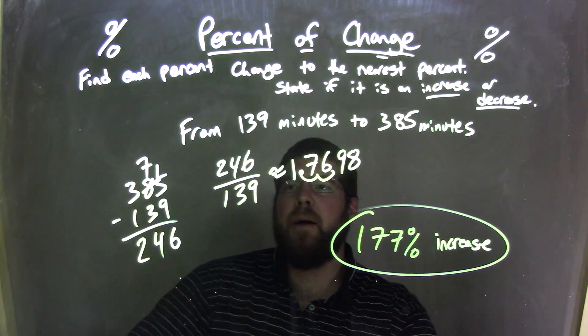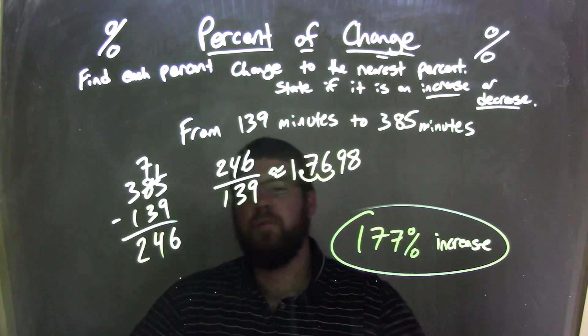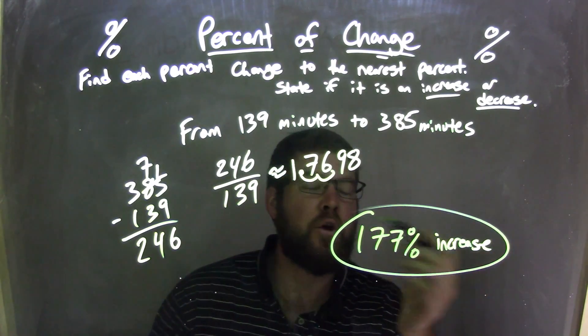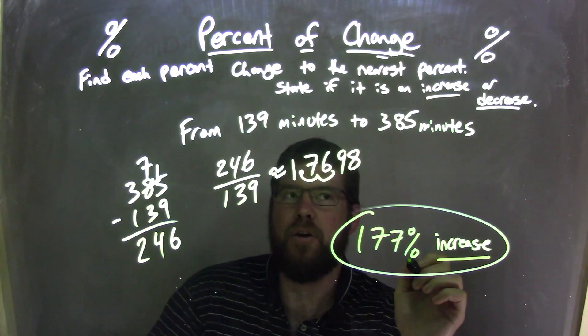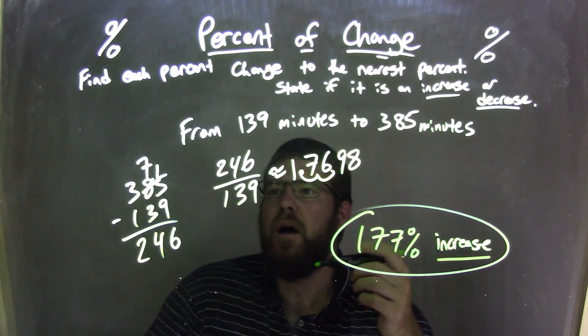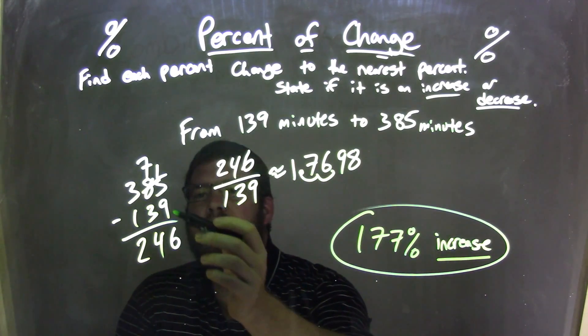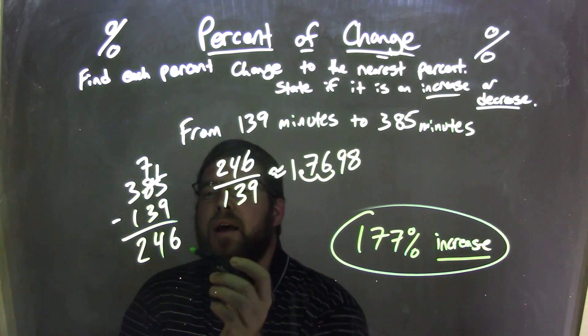So let's recap. We started with our problem from 139 minutes to 385 minutes. We knew that was an increase, so I put that down right there first. So I find that difference between the numbers, 385 minus 139, and got 246.